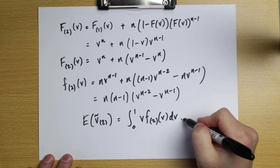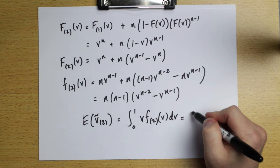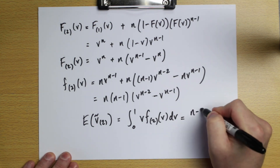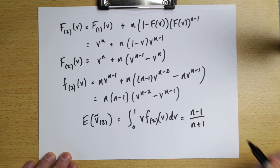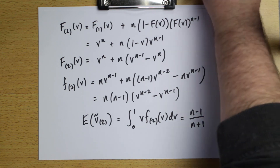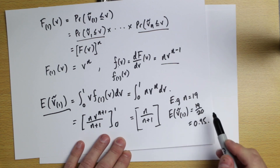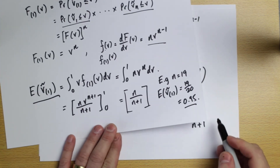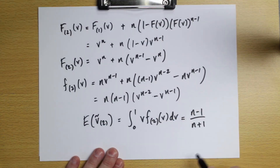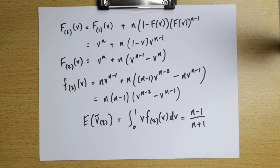Going through the steps in the lecture notes, you'll find a nice formula for the expected value of the second order statistic: (n−1)/(n+1). In our earlier example where n=19 people walked into the room, we got 0.95 for the first order statistic; for the second order statistic it would be 18/20 = 0.9. Once we have these tools, we're ready to start auction theory in the next part.